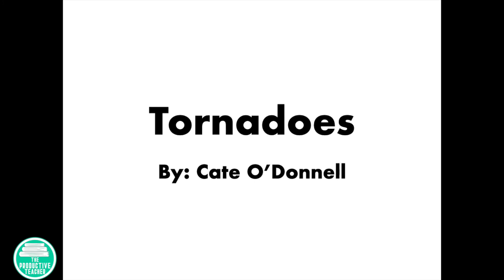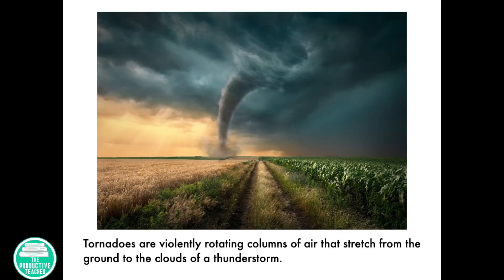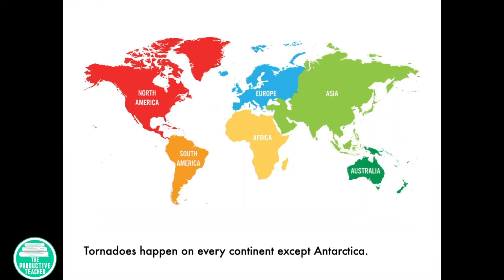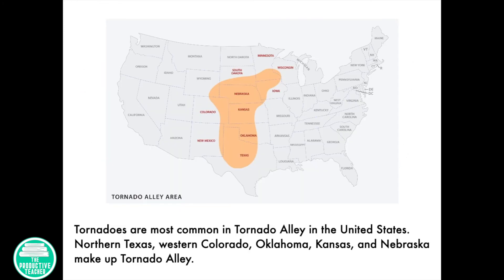Tornadoes by Kate O'Donnell. Tornadoes are violently rotating columns of air that stretch from the ground to the clouds of a thunderstorm. Tornadoes happen on every continent except Antarctica. Tornadoes are most common in Tornado Alley in the United States.